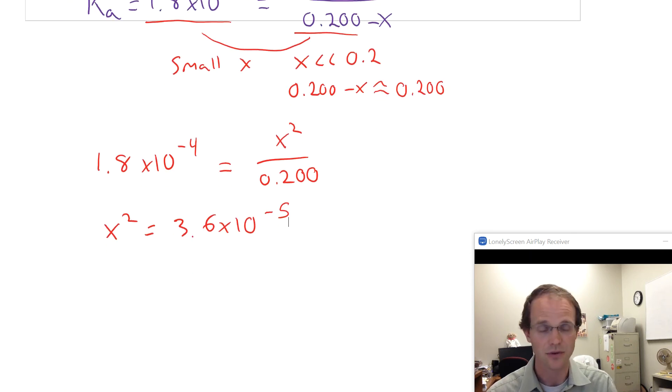If you take the square root of both sides, you get X is plus or minus. But we don't need to look at the minus one because we know X is going to be positive in this case.